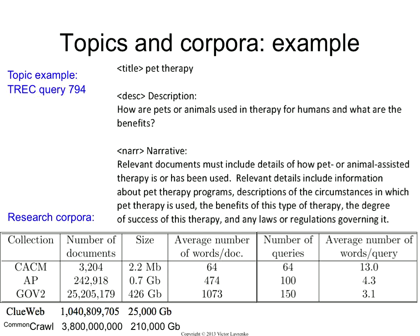These are some examples of commonly used corpora in IR. Communications of ACM is probably the oldest corpus — that's the one used in coursework one — with about 3,000 documents, about 2 megabytes, and relatively long queries averaging 13 words, which is unusual. Most research nowadays uses collections like Gov2, which has about 25 million documents, a lot more queries, and much shorter queries averaging about 3 words.